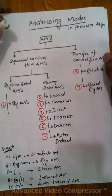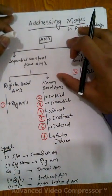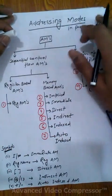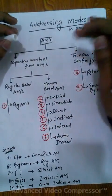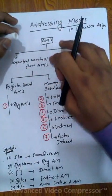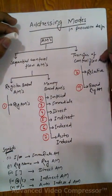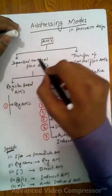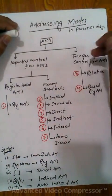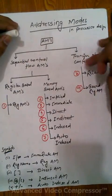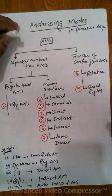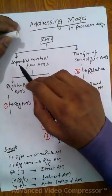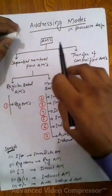Let's start. What is addressing mode? In microprocessor and also in computer organization and architecture, this topic is covered. Addressing modes are divided into two parts: one is the sequential control flow addressing modes, and the other is transfer of control flow addressing modes. In microprocessor you mainly go through sequential control flow addressing modes, but in computer organization you also see transfer of control flow addressing modes in detail, including relative and base register addressing modes.